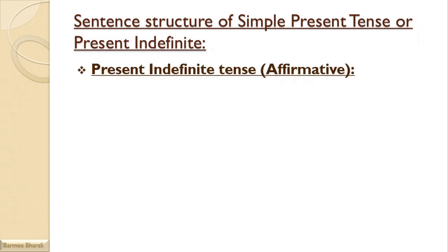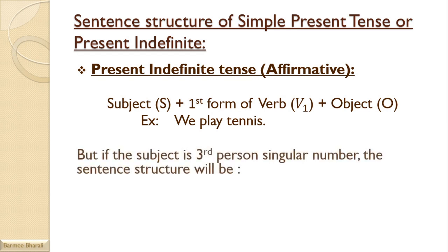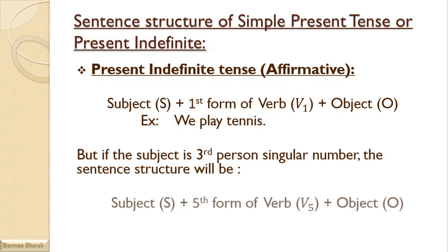Now we will discuss the sentence structure of simple present tense. For the affirmative, the structure is: Subject + first form of verb + object. For example, 'We play tennis.' However, if the subject is third person singular number, the structure becomes: Subject + fifth form of verb + object. For example, 'The girl goes to school.'